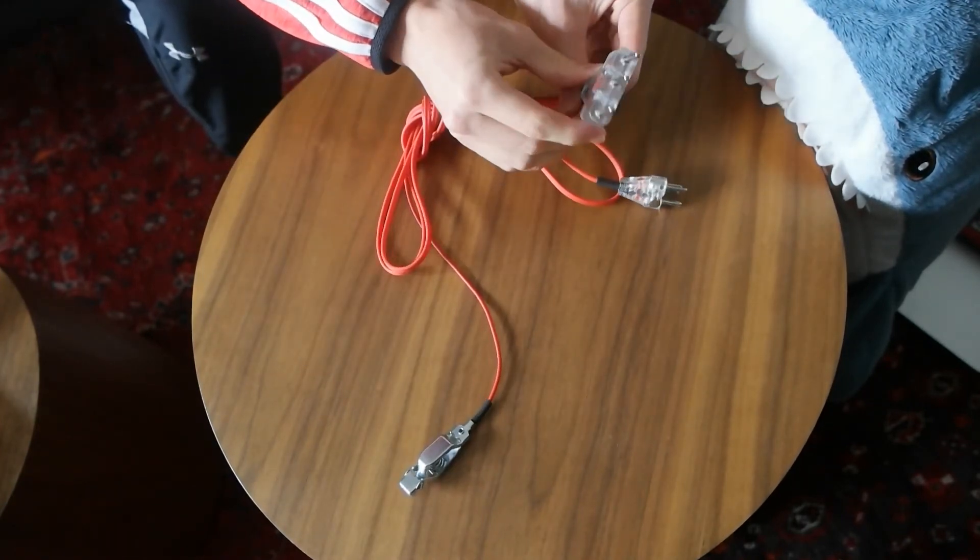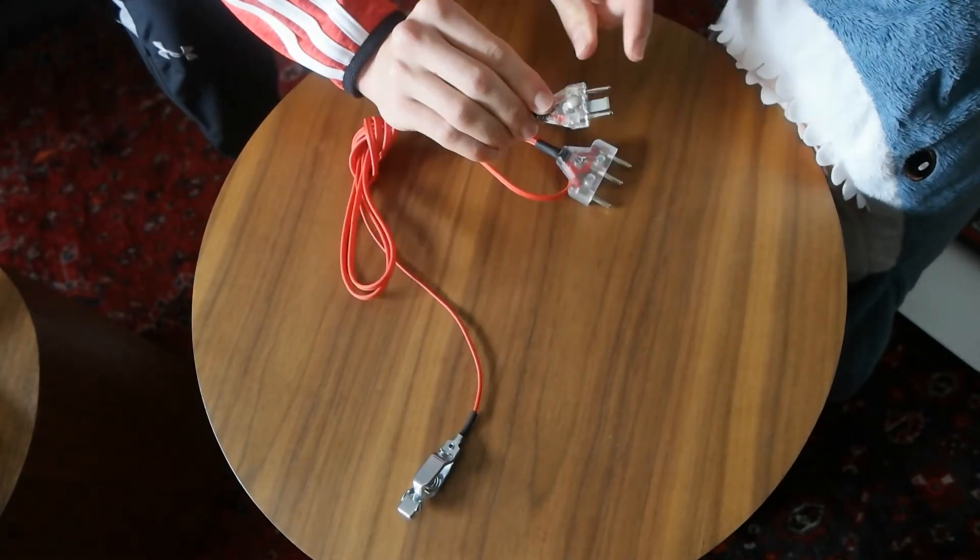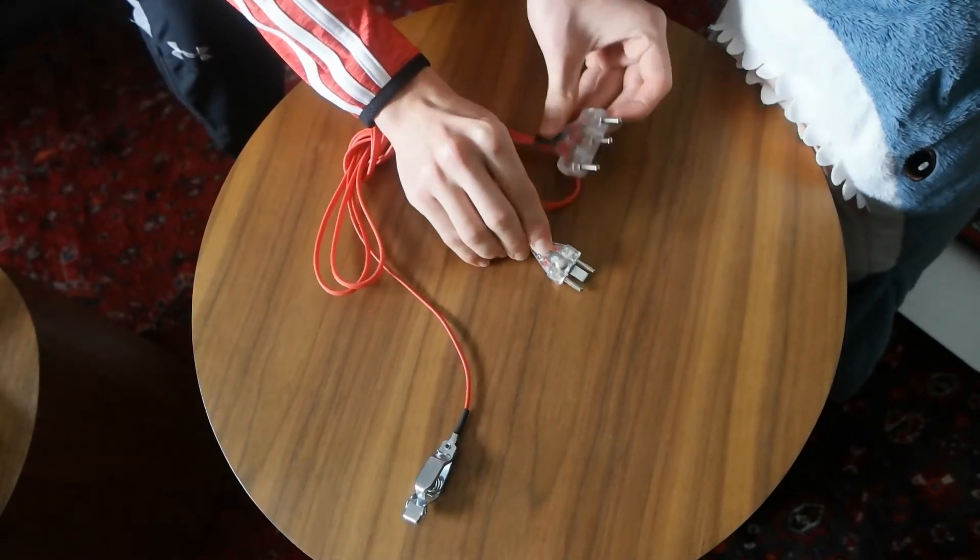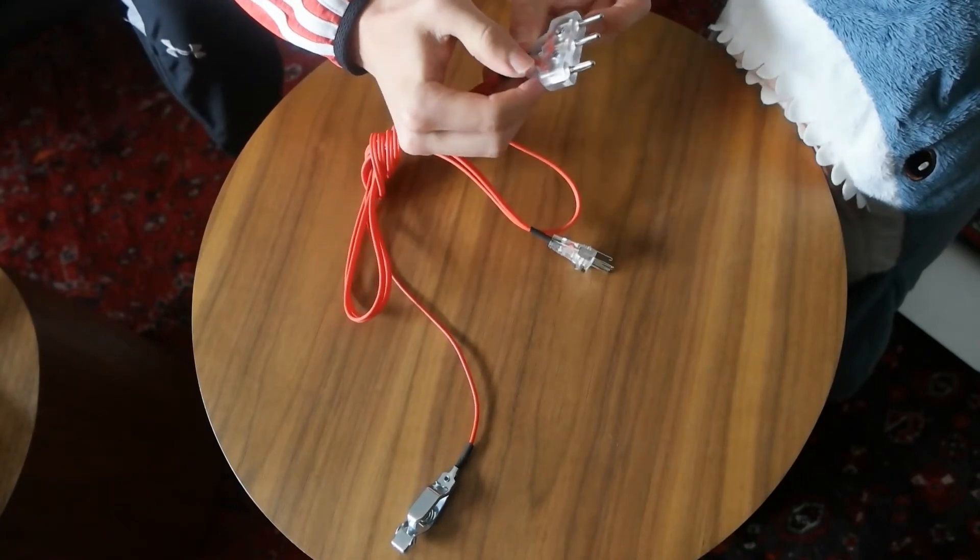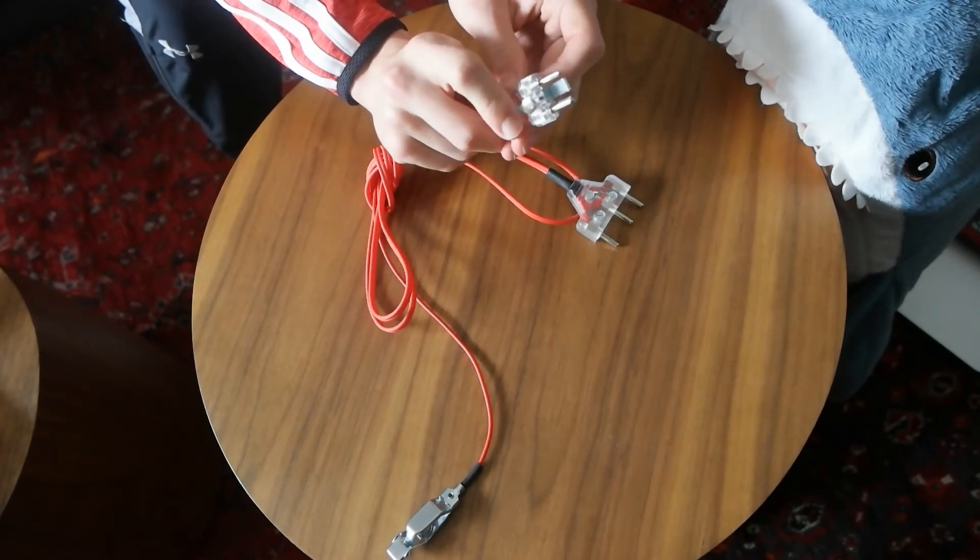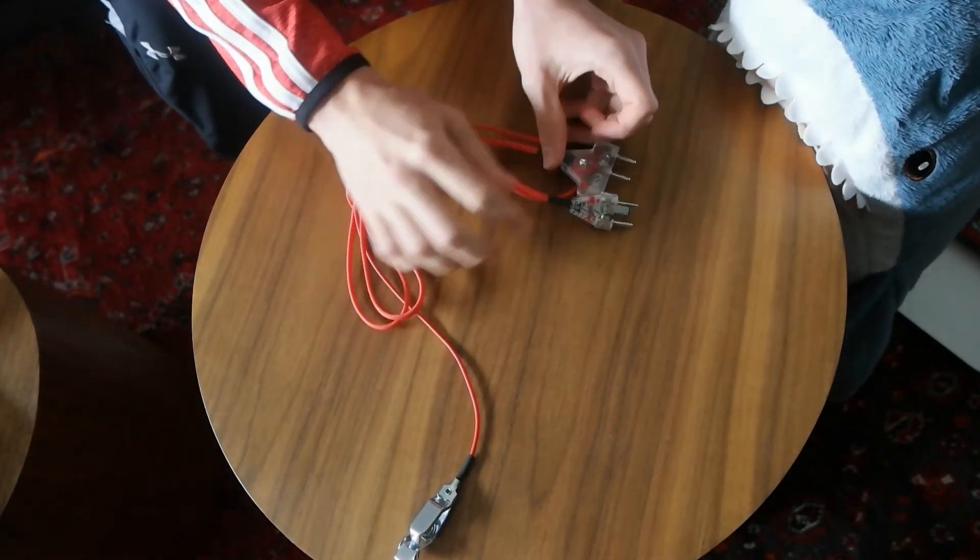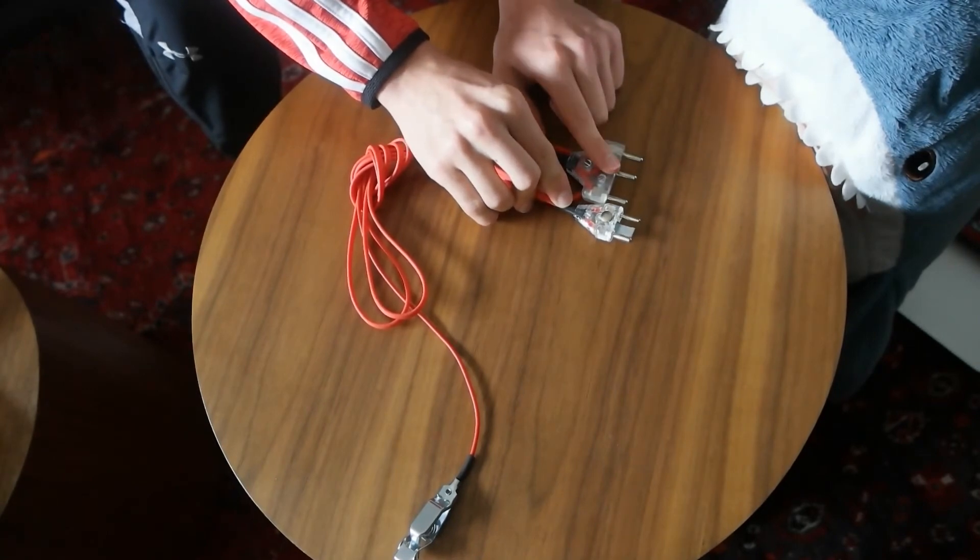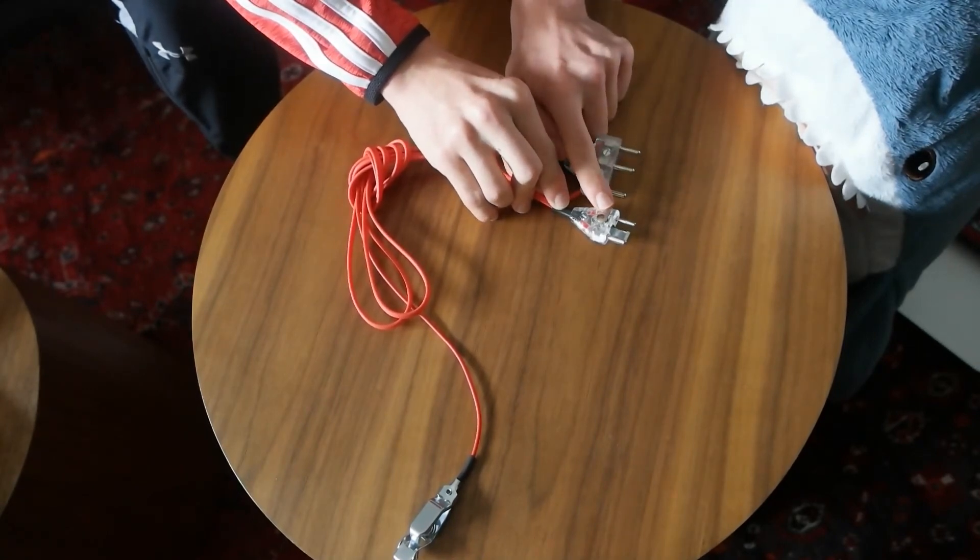The middle prong connects to the smaller of these two prongs on the two-pin end. Finally, the prong that's off on its own to the side attaches to the larger of the prongs on the two-pin. The voltage is sent from this middle wire to the smaller of the two-pin wires.